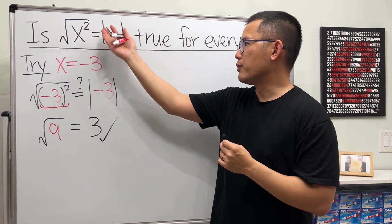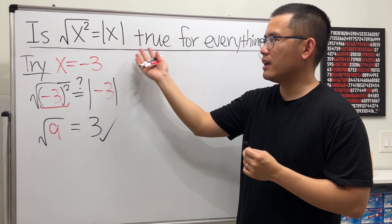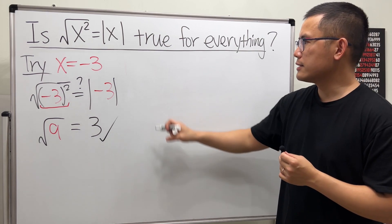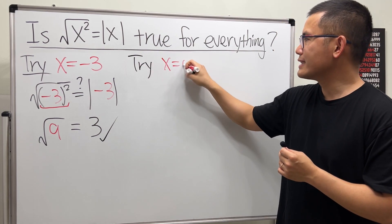And of course, if it's a positive number for x, then nothing too much fun. If you have zero, again it works obviously. Now let's try the complex number. Let's try x equals i.